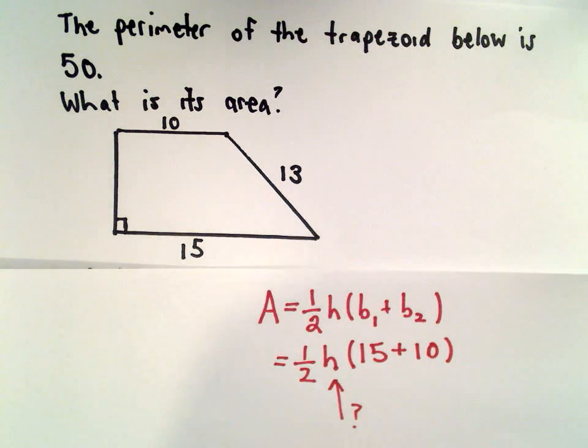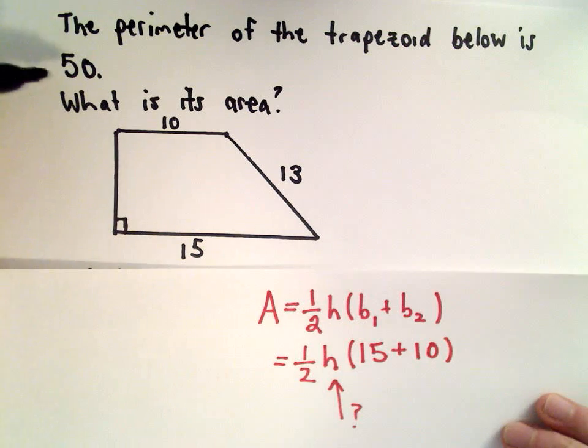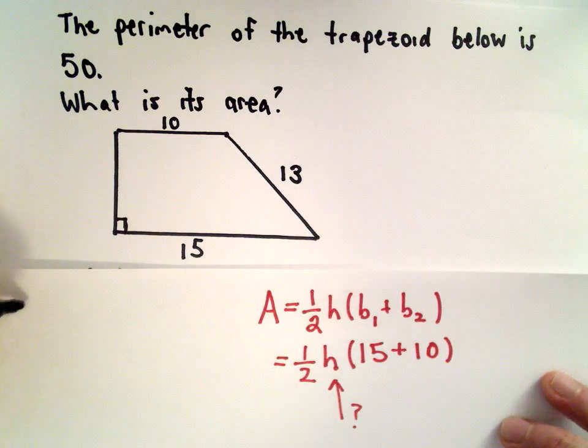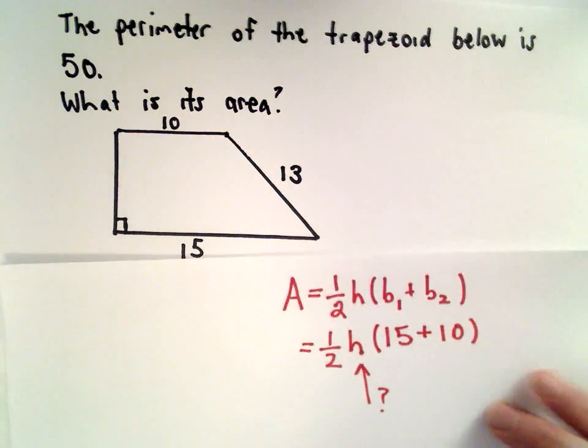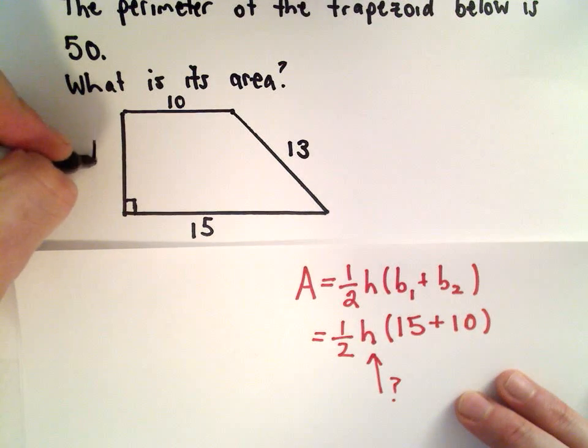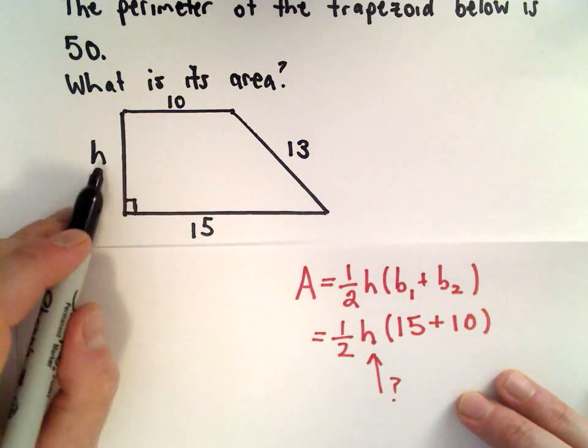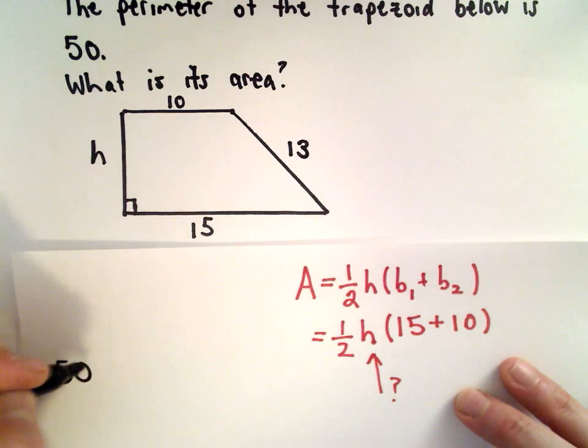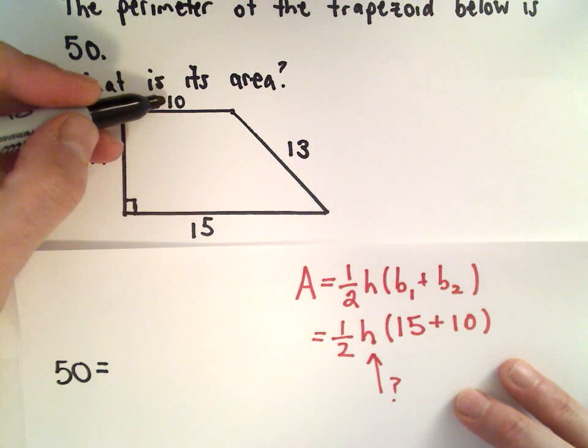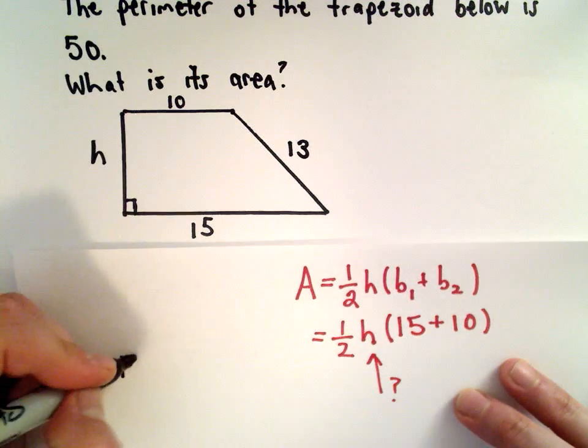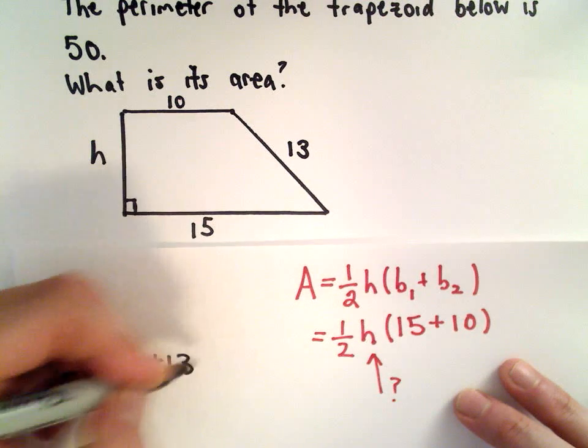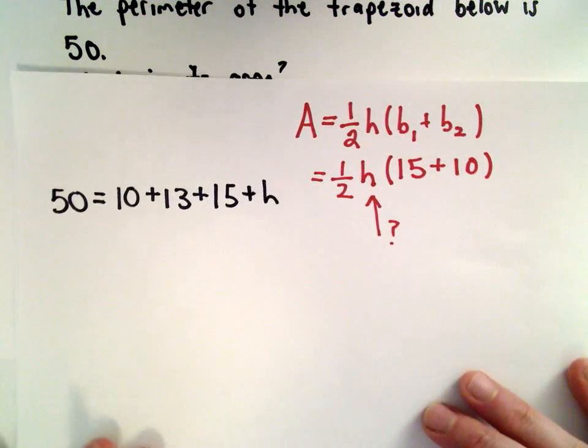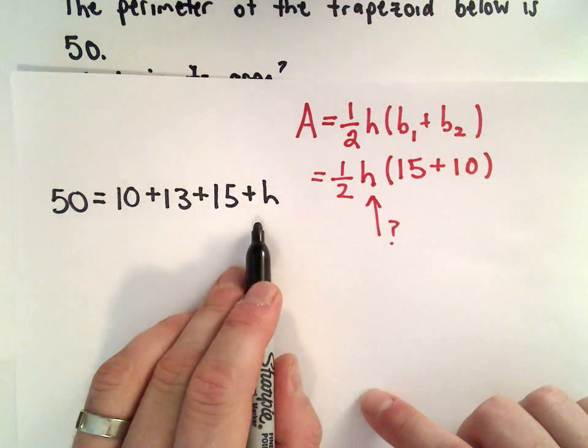To figure out the height of the trapezoid, I can use the fact that we were given the perimeter. The perimeter is the distance around, so I'm going to label this height as h. The perimeter is equal to 50 units. So if we take the side lengths that we know, that's going to be 10 plus 13 plus 15 plus h. And now we'll use this equation to solve for h.